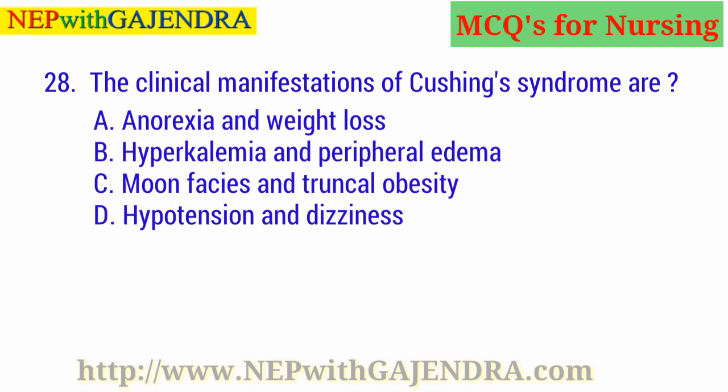The clinical manifestations of Cushing's syndrome are: A. Anorexia and weight loss. B. Hyperkalemia and peripheral edema. C. Moon face and truncal obesity. D. Hypotension and dizziness. The right answer is C: Moon face and truncal obesity.